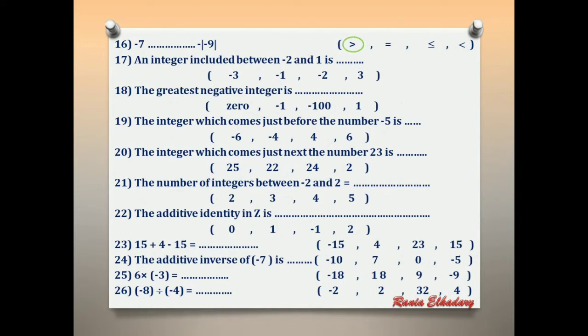Number 17: an integer included between negative 2 and 1. The numbers between negative 2 and 1 are negative 1 and 0. The answer that exists in the choices is negative 1.